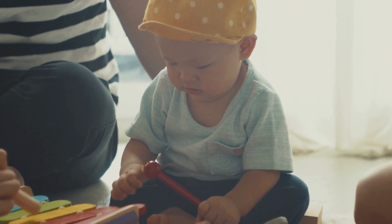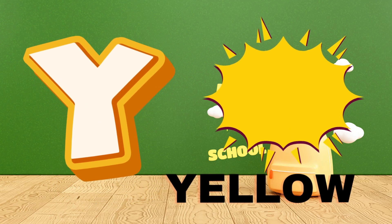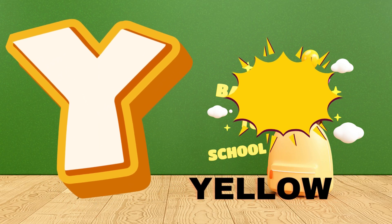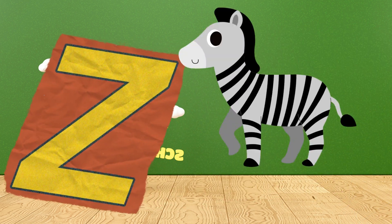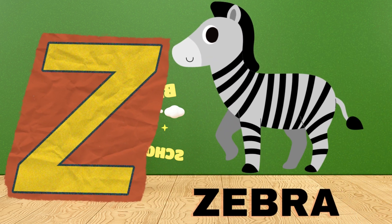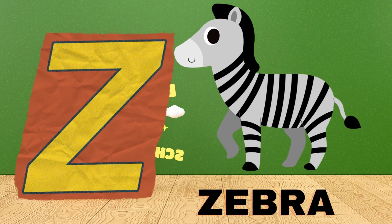Y is for yellow, y-y-yellow. Z is for zebra, z-z-zebra.